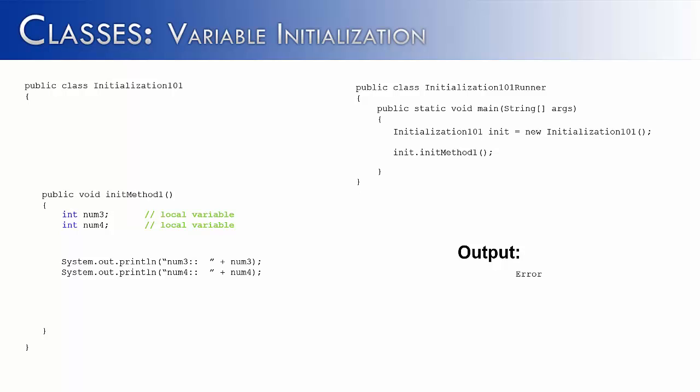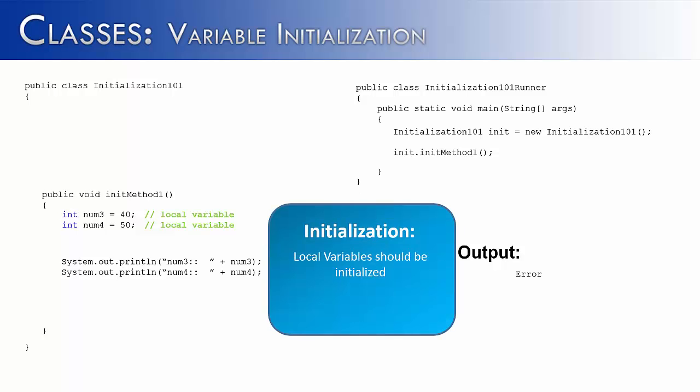So let's go ahead and initialize them. We've given them the values 40 and 50. And point out local variables should be initialized. If you don't do this, it's very easy to get an error. So now that we've initialized the variables, if we were trying to run the program, it would work just fine. And it would give us exactly what we expect, num3 40, num4 50.